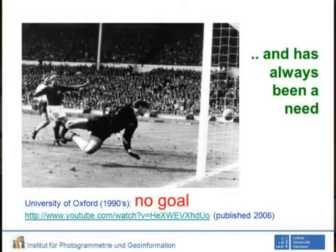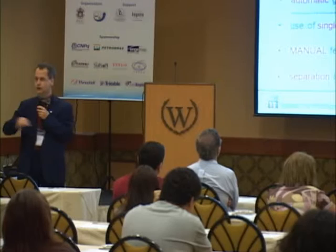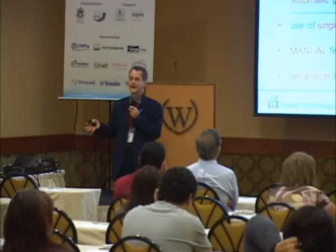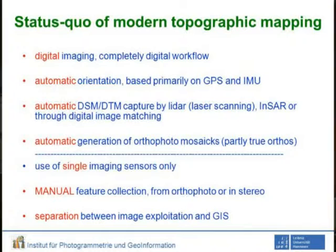Coming back to the status of topographic mapping — this is how I see it, and this concludes the introduction to this talk. Everything is done, everything is fine, automatically, except the actual feature collection. Except what you really want to do — namely, take the images in order to document the scene or in order to monitor change. So that's where the challenge is, in manual feature extraction.